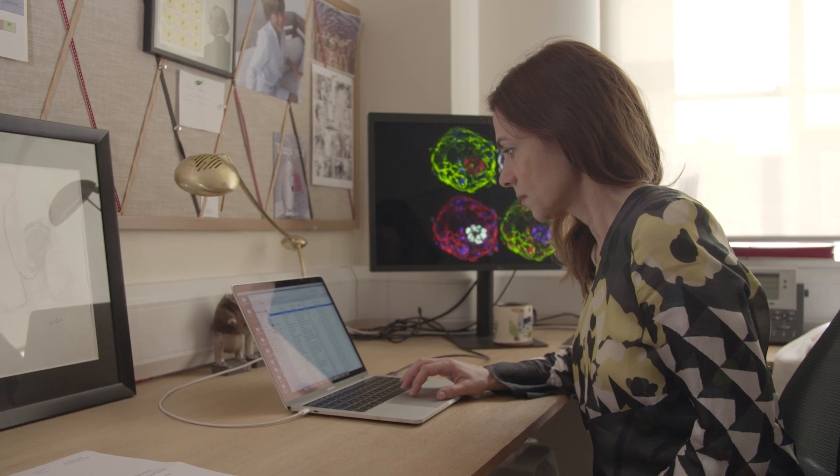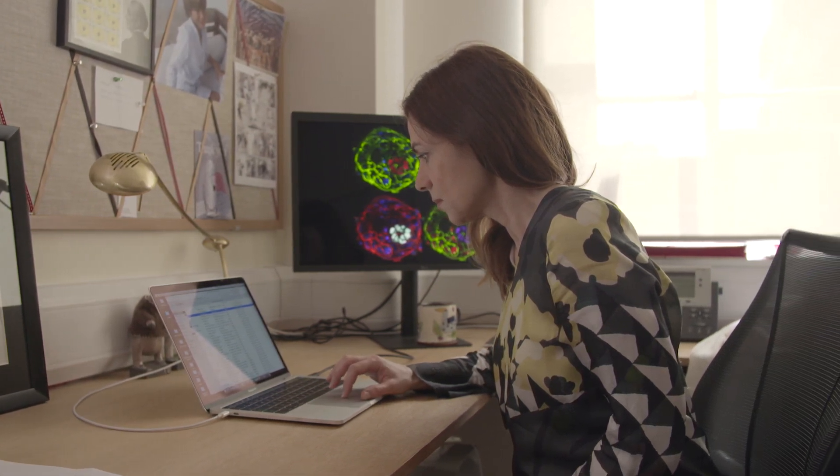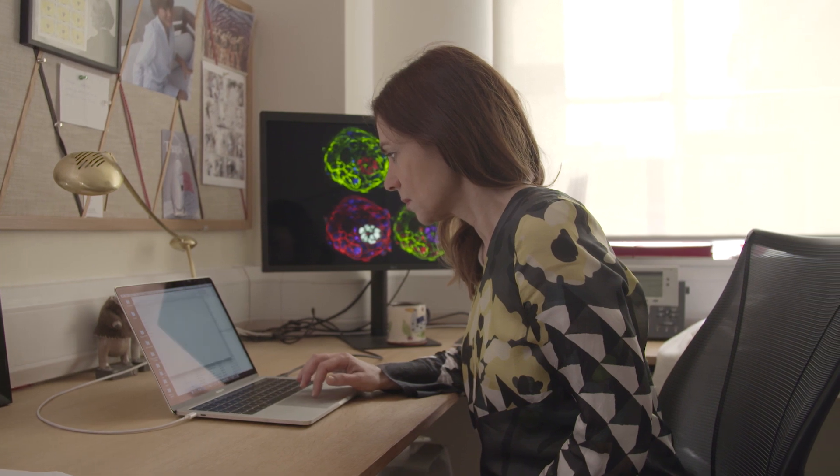Until recently we were able to study our own development until day seven, when the cells decide to vary for the first time and make three different types of cells. But now we can take it for the next seven days and really try to understand how this group of cells that will set up the future body become established for the first time.